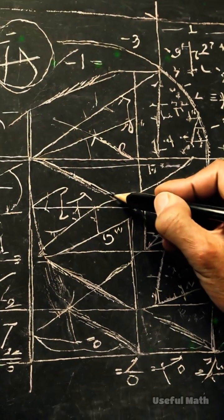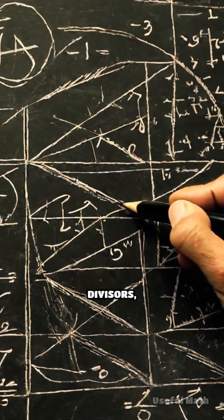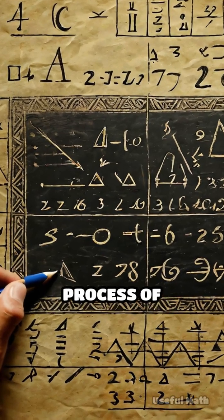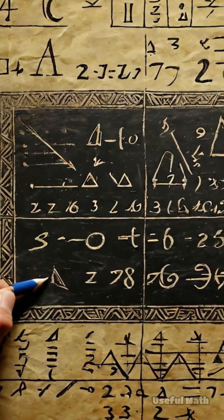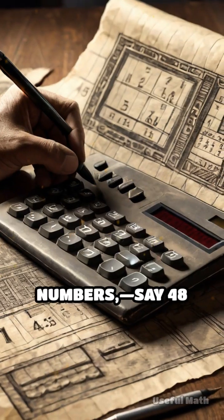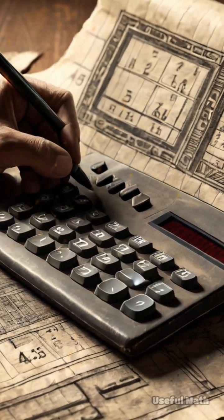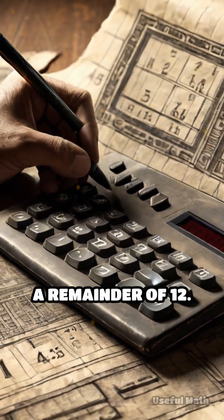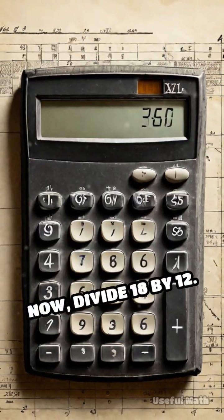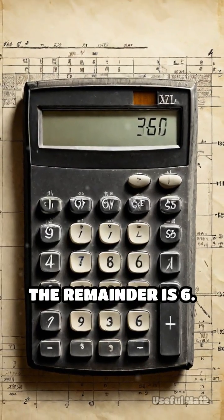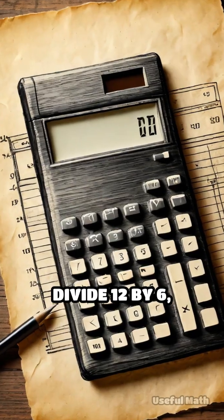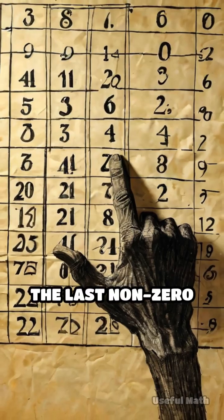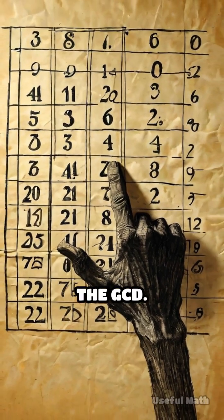Here's how it works. Instead of laboriously listing all divisors, Euclid's algorithm uses a clever process of repeated subtraction or division. Take two numbers, say 48 and 18. Divide 48 by 18 to get a remainder of 12. Now divide 18 by 12 — the remainder is 6. Divide 12 by 6 and the remainder is 0. The last non-zero remainder, 6, is the GCD.